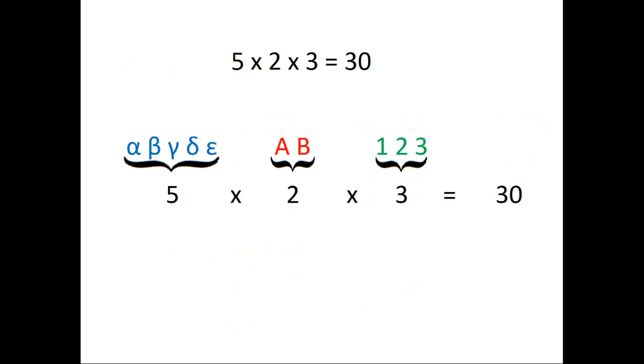Since we have five objects in the first group, two objects in the second group, and three objects in the third group, there are 30 total possibilities.